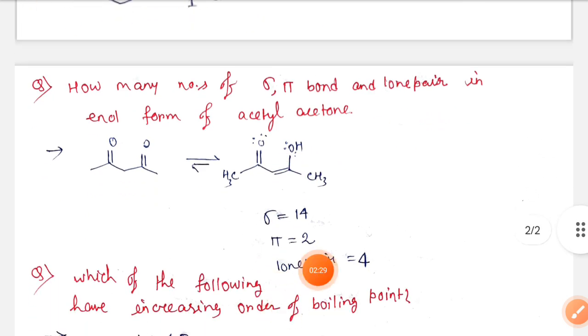Acetyl acetone structure is this, and if we do tautomerism to this then we will get the enol form of acetyl acetone. Here sigma bond is 14, pi bond is 2, and lone pair is 4.